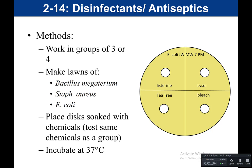This experiment would be done in groups of three or four. You would need three plates. One plate you would swab with Bacillus megaterium — this is a liquid culture — you would dip your sterile swab in the bacteria and swab the entire plate back and forth to distribute the bacteria across the plate. You would do this for all three organisms: one plate with Bacillus megaterium, one with Staphylococcus aureus, and one with E. coli.